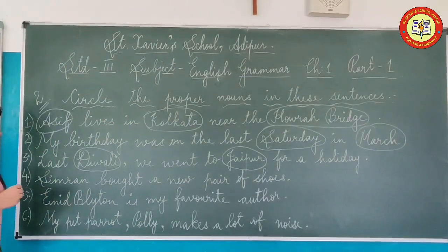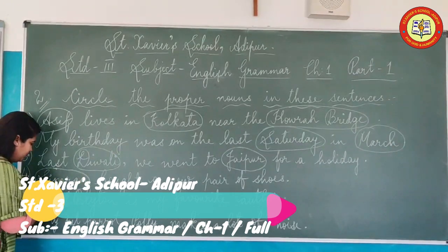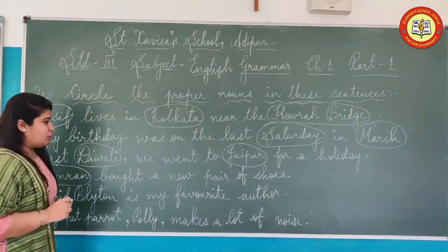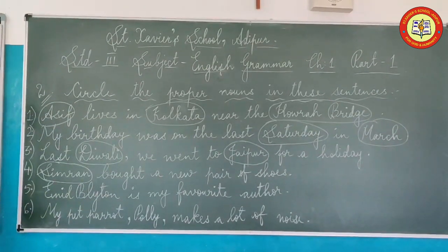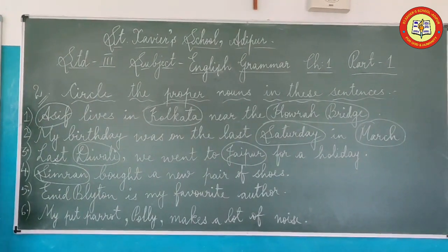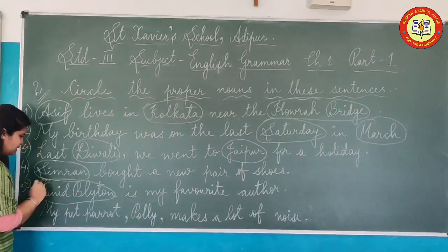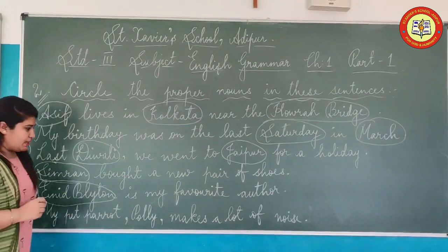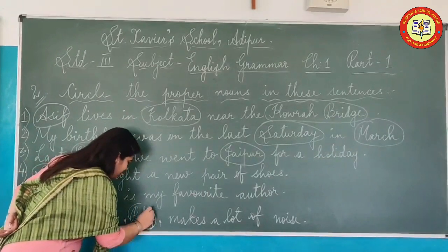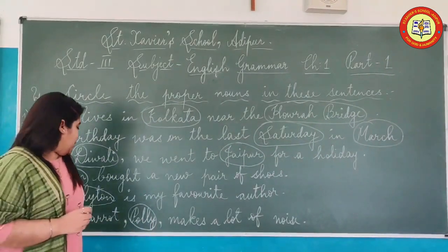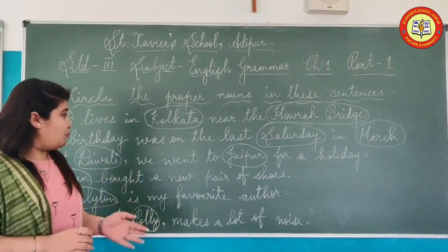Number four: 'Simran bought a new pair of shoes.' So here, Simran will come as the name of a person. There is no other proper noun in that sentence. Fifth sentence: 'Enid Blyton is my favourite author.' The proper noun here is Enid Blyton, the name of the author. Sixth sentence: 'My pet parrot Cody makes a lot of noise.' The name of the parrot is Cody. So Cody was the proper noun in the last sentence. We have now done this exercise of proper nouns.